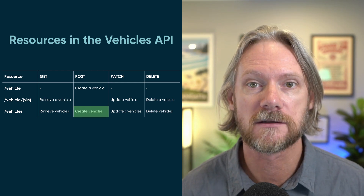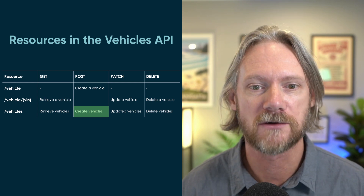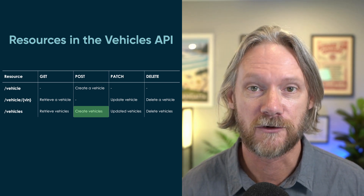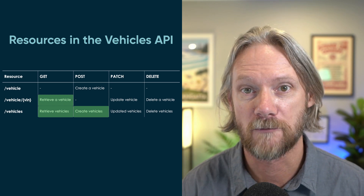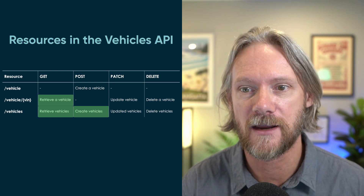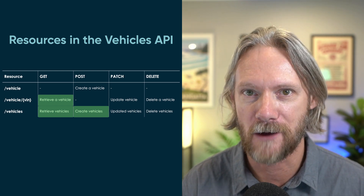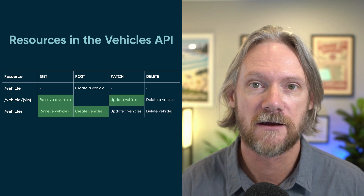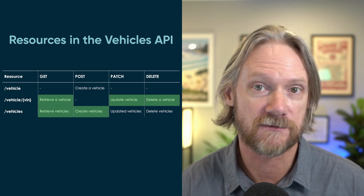For creating records in ServiceNow — creating a vehicle — we're going to do that via a POST using the slash vehicles resource. We've got two different resources for getting records: one for an individual vehicle, and another for a collection of vehicles. PUT and PATCH we'll discuss in a separate video, but we'll create one PATCH resource for modifying a record and one DELETE resource for deleting a record.